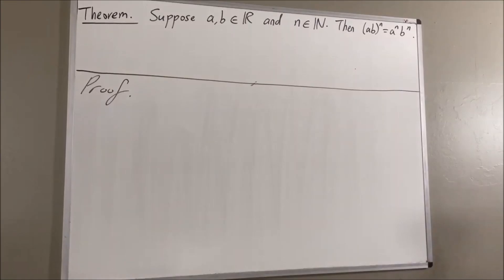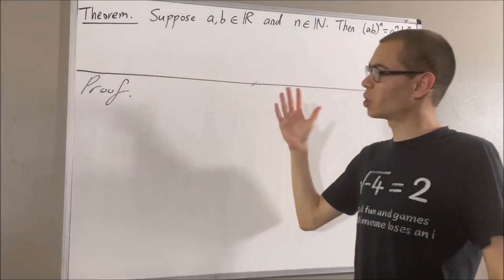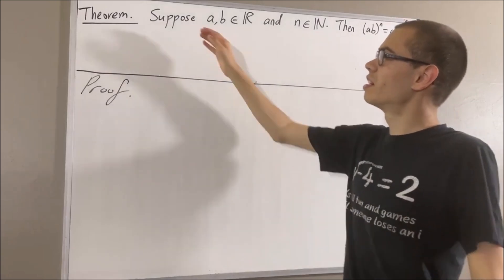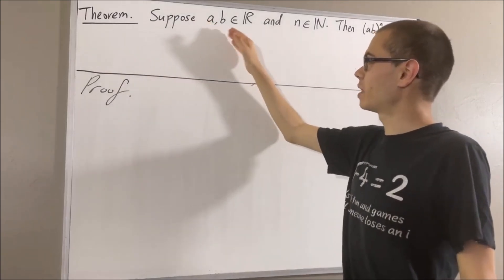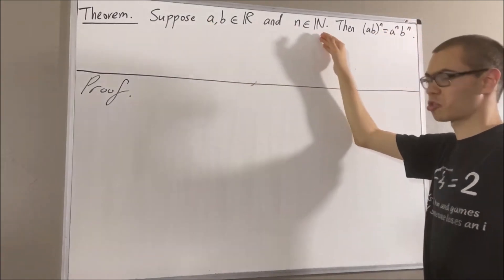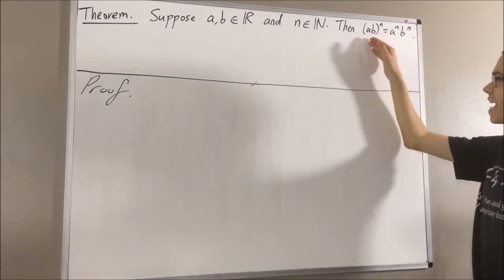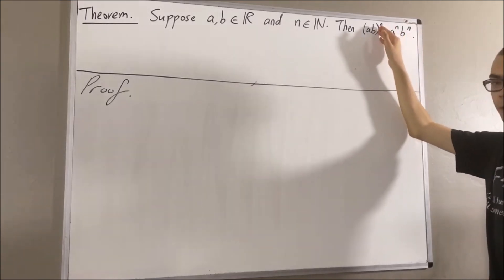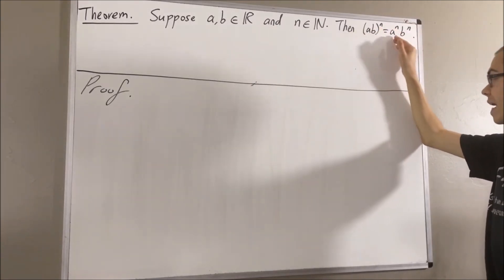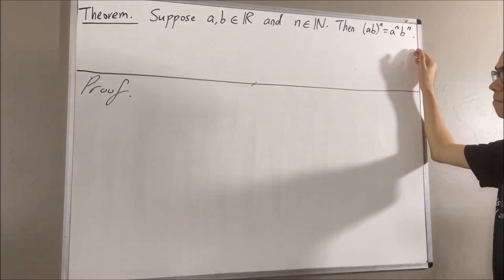Hello! In this video we're going to prove the following theorem. Suppose A and B are real numbers and n is a natural number. Then AB to the power of n is equal to A to the power of n times B to the power of n.